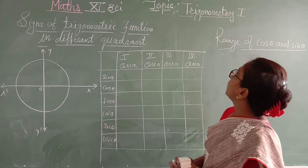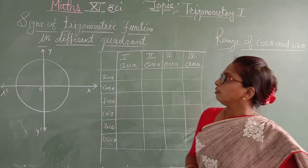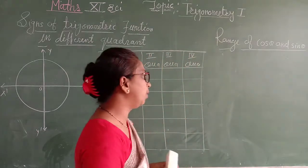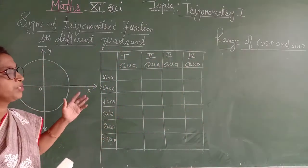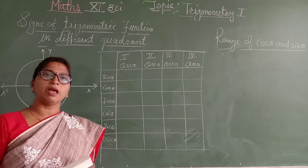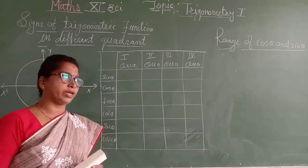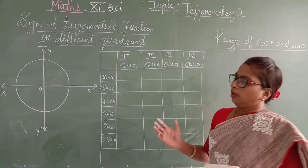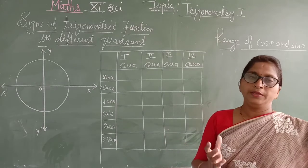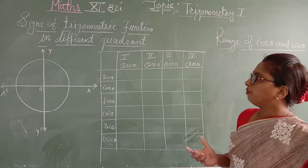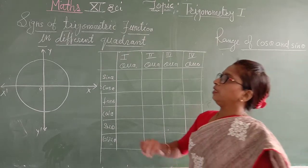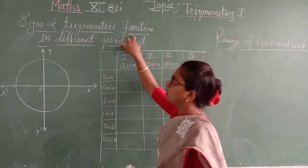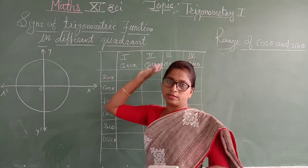Let us continue the trigonometry lesson. In the last lecture we studied the basics of trigonometry which we learned in 9th and 10th grade, including negative angle trigonometric functions. Today we will see the sign of trigonometric functions in different quadrants.